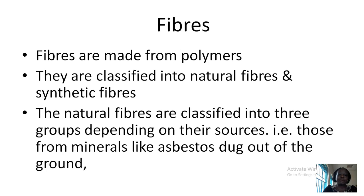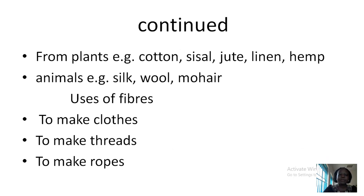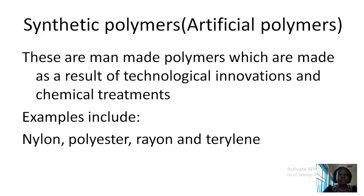Fibers are also made from polymers. You find that cellulose is made up of fibers. What are fibers? Fibers are made from polymers and these fibers are also classified into two: the natural fibers and then the synthetic fibers. The natural fibers are classified into three groups still depending on their sources. We have those which come from minerals, for example asbestos, which is dug from the ground. Then we have those from plants, for example cotton, sisal, jute, linen and hemp. Then from animals, for example silk, wool and mohair. Fiber is used to make cloth, to make threads — if you actually split a thread you'll see lots of fiber making one thread — and it is used to make ropes and so many others.